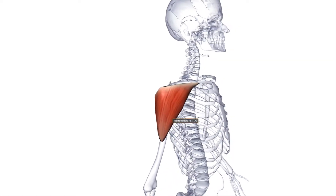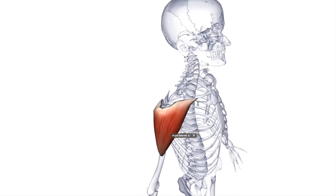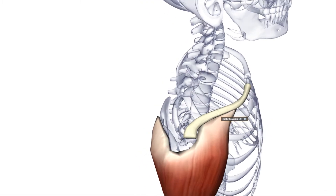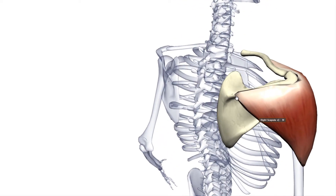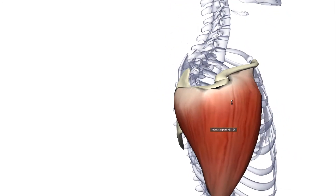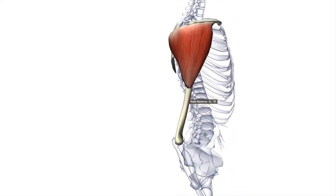Here is the right deltoid muscle. The deltoid muscle has its origin on the clavicle. It also has the origin on the acromion — this part of the scapula is the acromion — and also has the origin on the spine of the scapula. The insertion of this muscle is the deltoid tuberosity of the humerus.